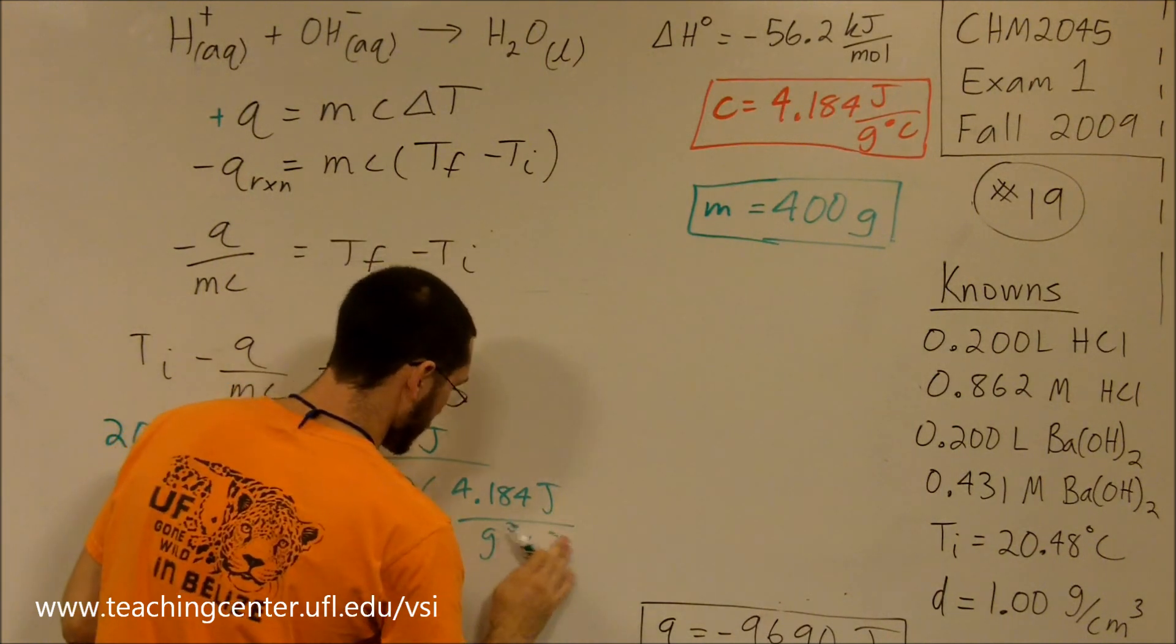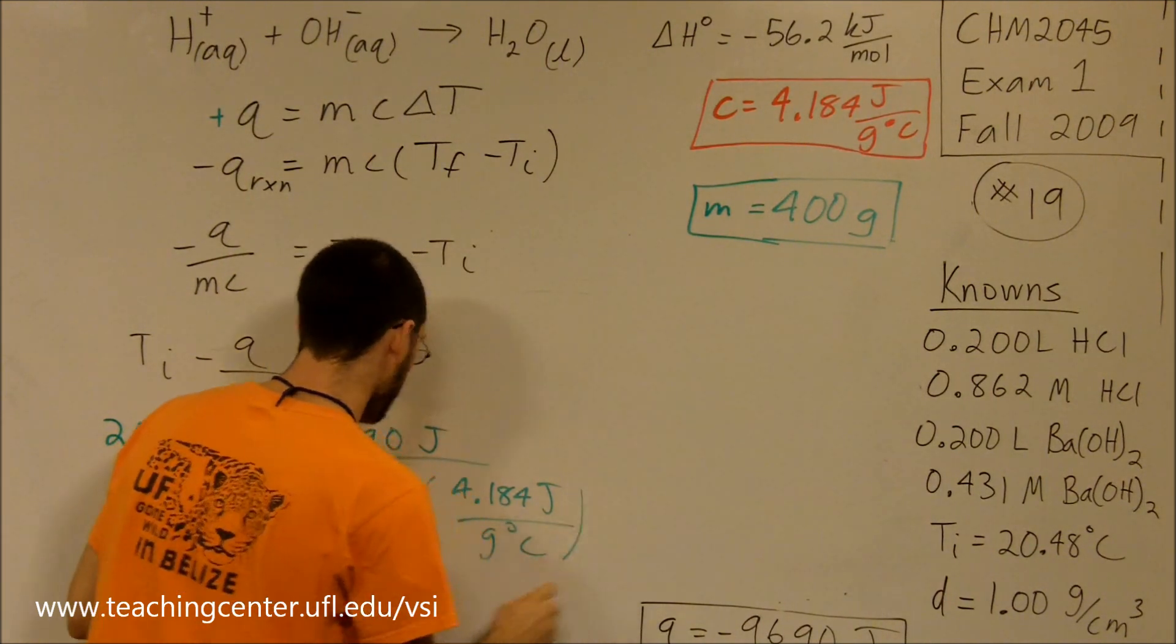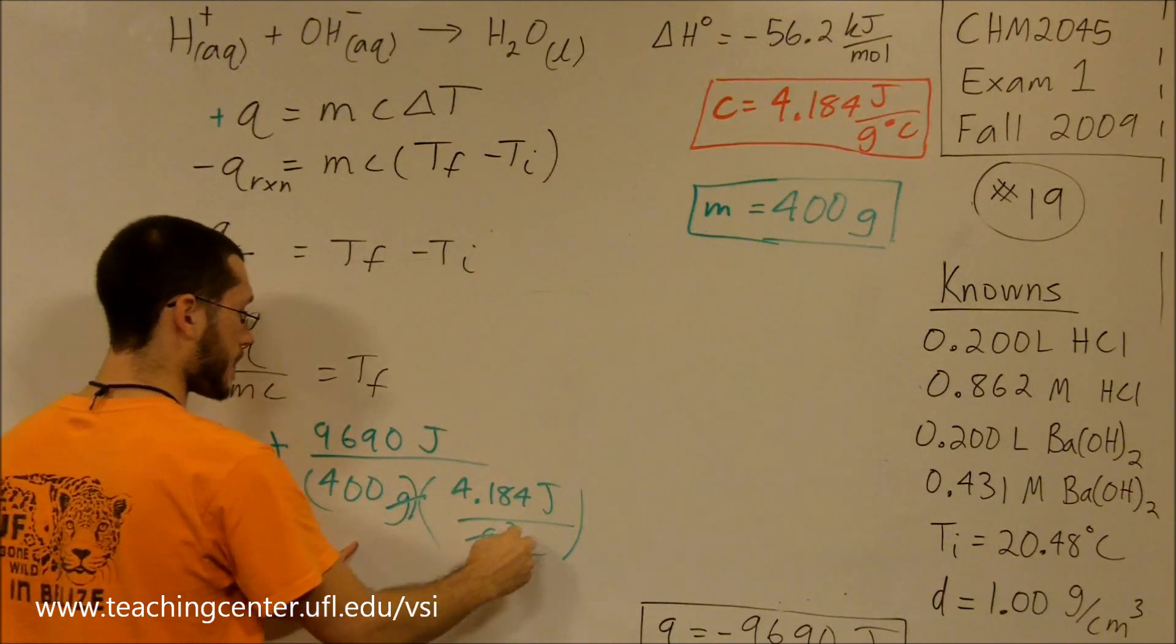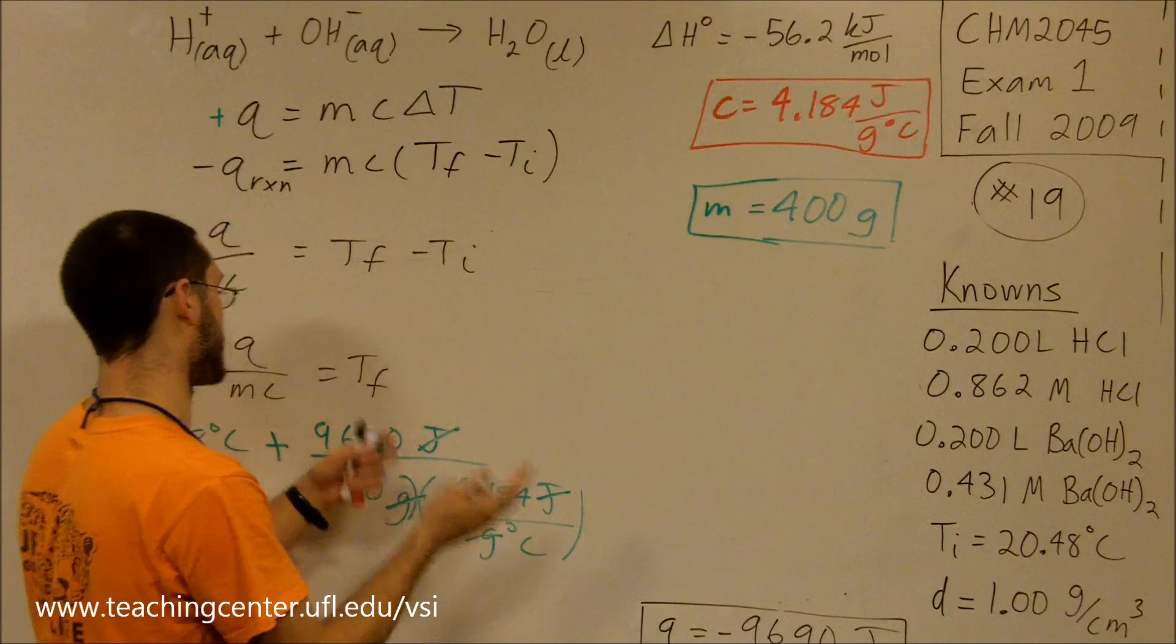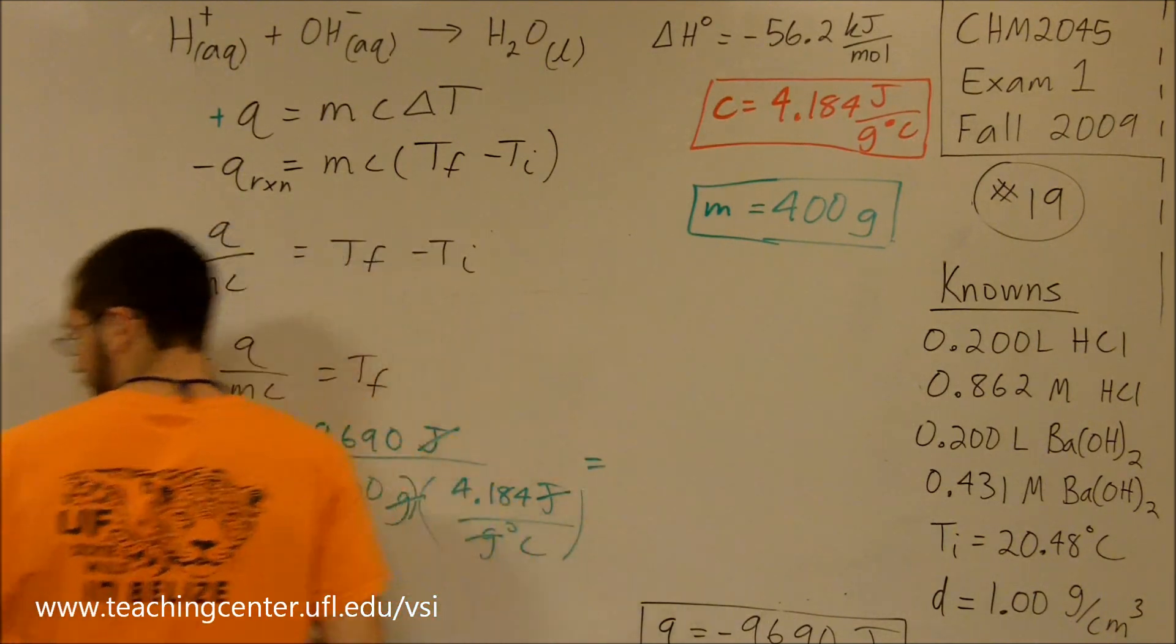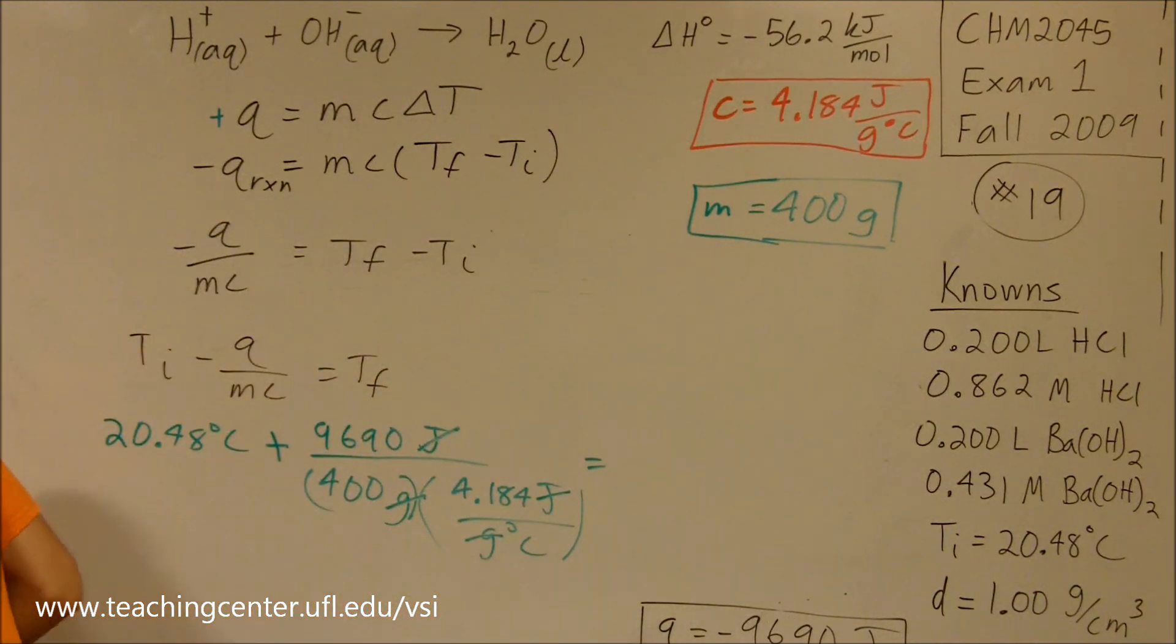Grams cancel grams. Joules cancel joules. Celsius, which is on the double bottom, comes up to the top, adds with this Celsius. Gives you a final temperature of 26.3 degrees Celsius.